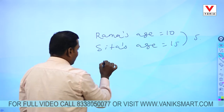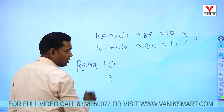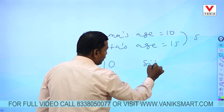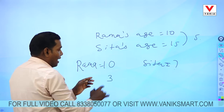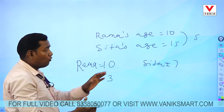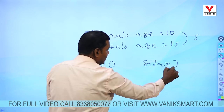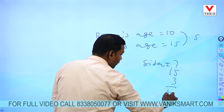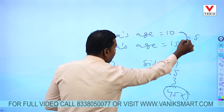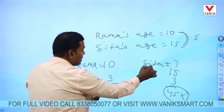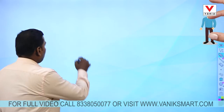If Rama's age is 10 and Rama's age will be 3 times, then what is Sita's age? Rama's age 3 times is 30, and the difference between Rama and Sita is 5, so Sita's age is 30 plus 5 equals 35.